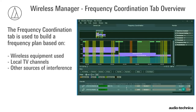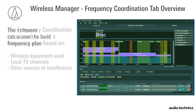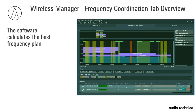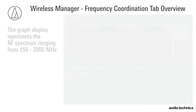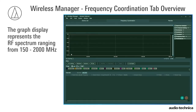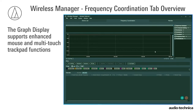The Frequency Coordination tab is used to build a frequency plan based on wireless equipment used, local TV, and other sources of interference. The software calculates the best frequency plan, and the results can be deployed to AT network devices or manually entered for other equipment. The graph display represents the RF spectrum, ranging from 150 to 2000 MHz.